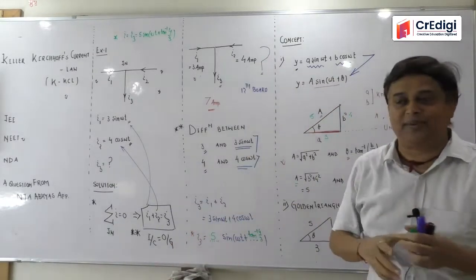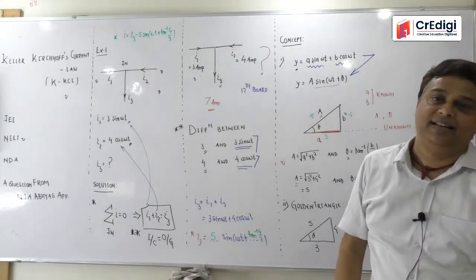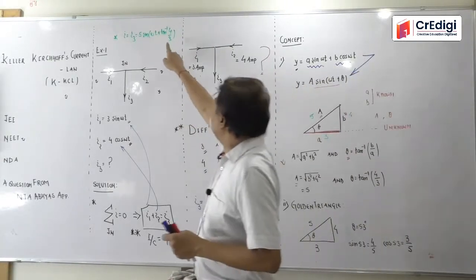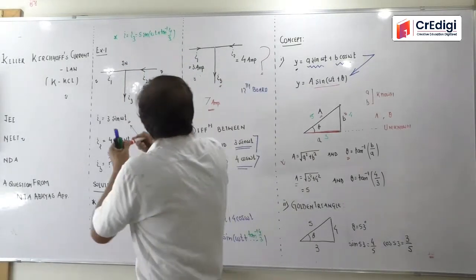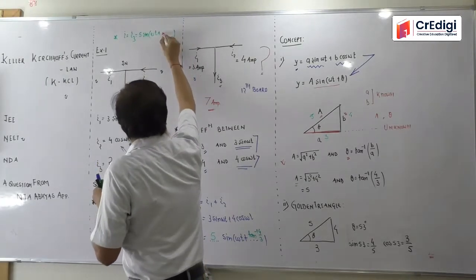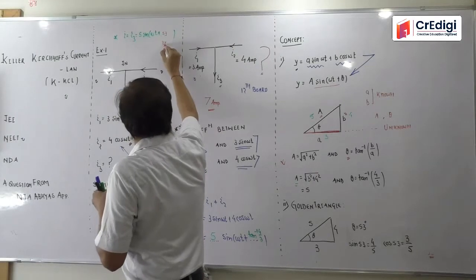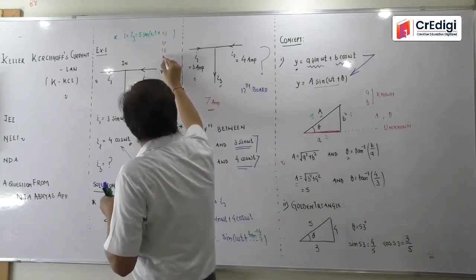Problem is that when I look at the first option, then it is 5 sin omega t, second option then it is 5 sin omega t, first, second, third, fourth option 5 sin omega t. And this value tan inverse 4 by 3, I don't get in my options.